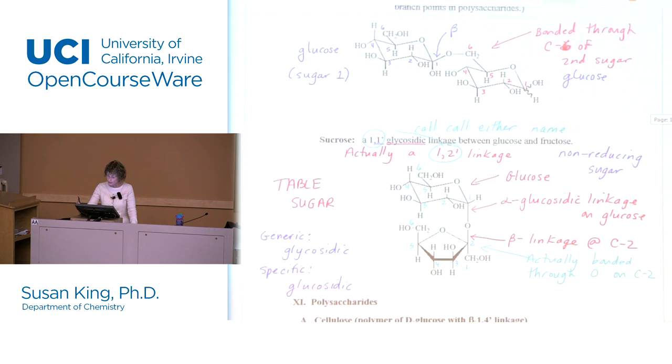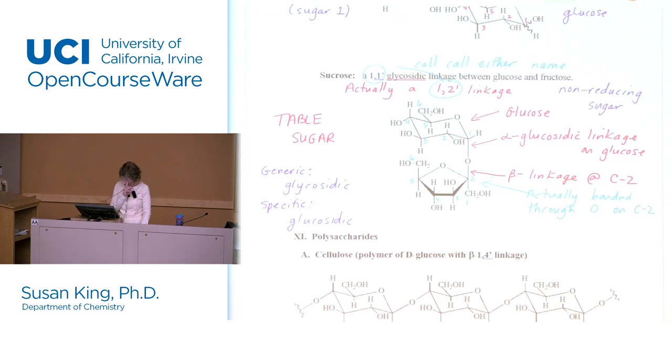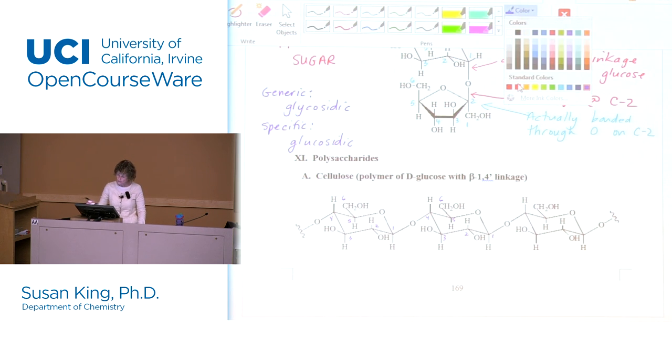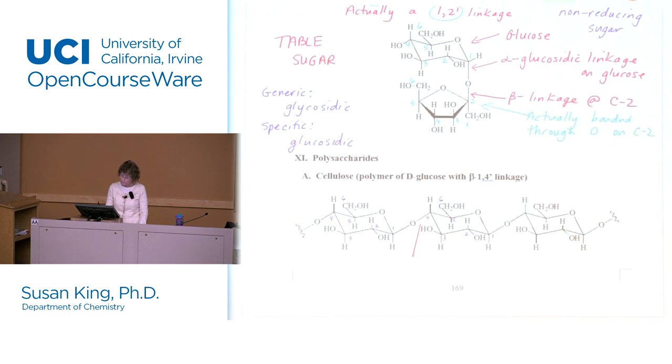We're not going to talk about oligosaccharides but we are going to jump right to polysaccharides. Here's cellulose, the polymer of D-glucose with the beta 1,4 prime linkage. Let's number here 1,2,3,4,5,6. So we're bonded through carbon number four. And this is beta. So since each monomer is glucose then this is a beta 1,4 prime glucosidic linkage.